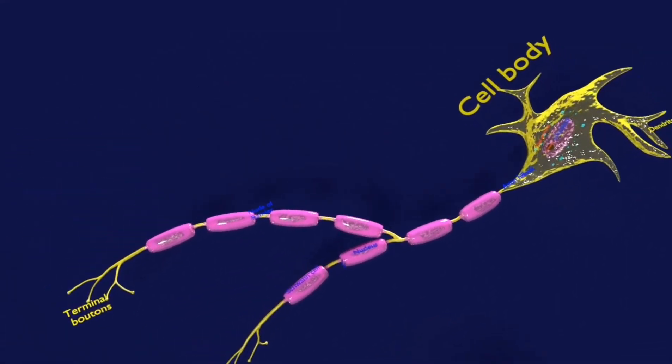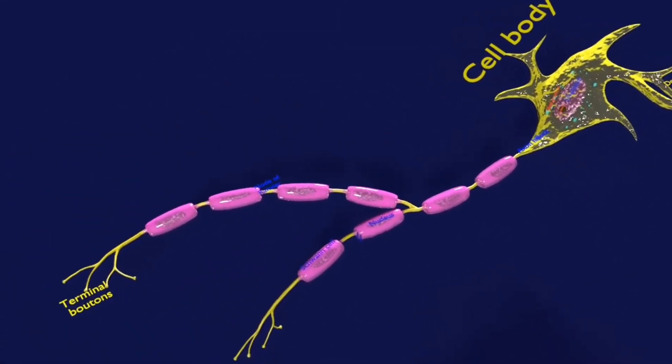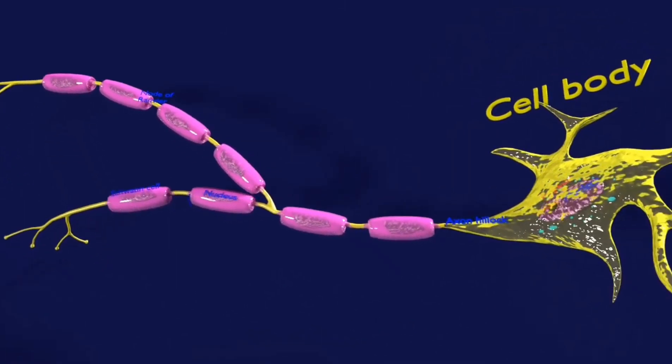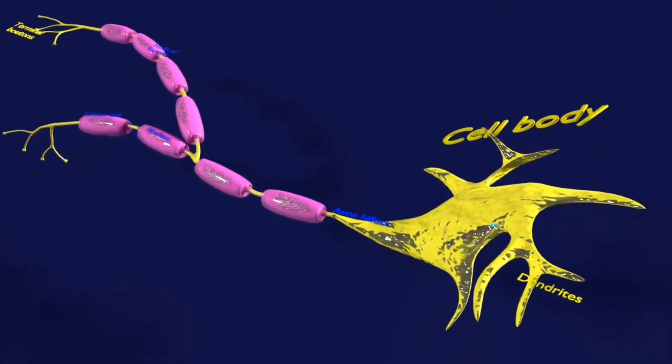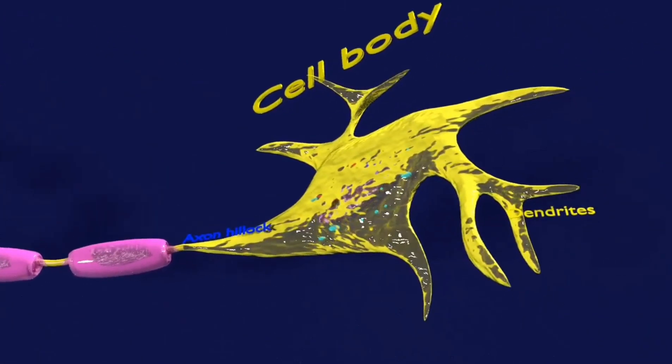A neuron is an electrically excitable cell that is responsible for the transmission of nerve impulses and information in the brain, ganglia, and spinal cord.